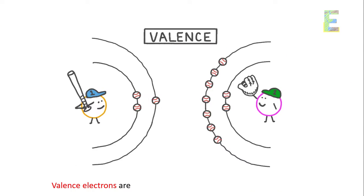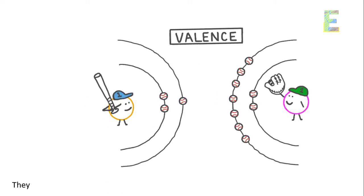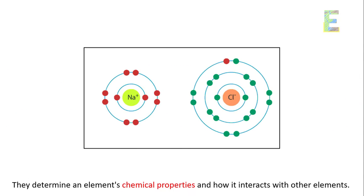Valence electrons. Valence electrons are the electrons in the outermost shell of an atom. They determine an element's chemical properties and how it interacts with other elements.